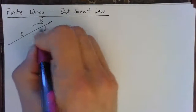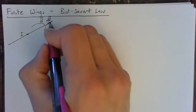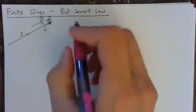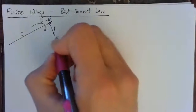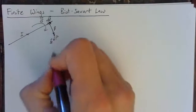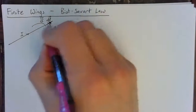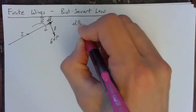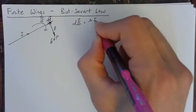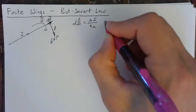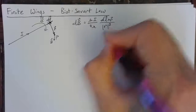If you take some infinitesimal segment of this wire and give it a direction DL, then this will have an effect on the magnetic field at a point P, which is some distance R away. The effect of this tiny piece of the wire DL is a differential piece of magnetism defined as mu — the electromagnetic constant — times I over 4π, times DL cross R over the magnitude of R cubed.